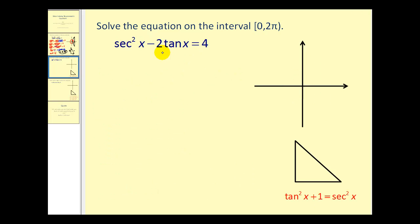Here we have secant squared x minus two tan x equals four. Well, we can replace secant squared x with tan squared x plus one. Let's go ahead and do that.